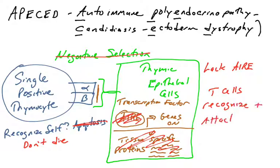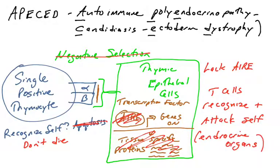So individuals who suffer from this autoimmune disorder have T cells that recognize and attack cells, especially endocrine glands. That's a small list of defects in T cell-mediated immunity.